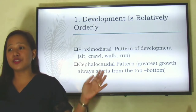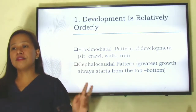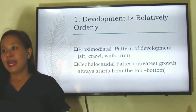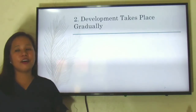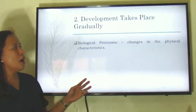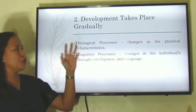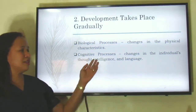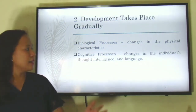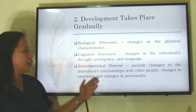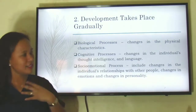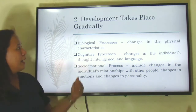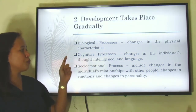The cephalocaudal pattern, on the other hand, means that growth always starts from top to bottom — you develop the head first down to the other parts of your body. In your CLMS account, I have given you a reading about researches on both the proximal-distal and cephalocaudal patterns of development. Development also takes place gradually. There should be change in physical characteristics, changes in intelligence and use of language, changes in individual relationships, emotions, and personality.